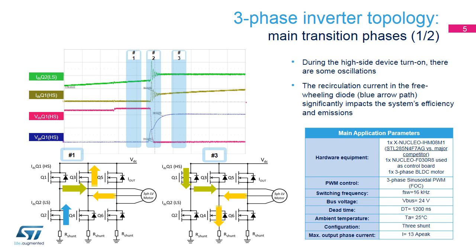At this stage, the phase current will not change direction. Once the device is finally switched on — section number three — the current on the LS has already completed the freewheeling stage while the HS current grows to the maximum loading value. The recirculation current significantly impacts the system's efficiency and emissions.